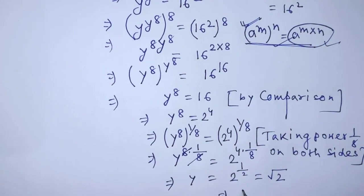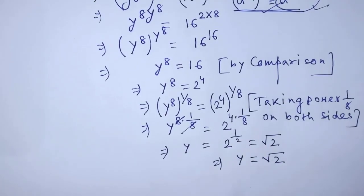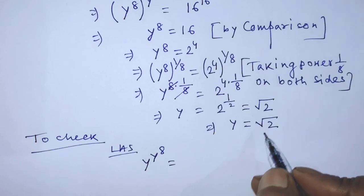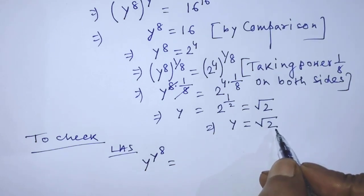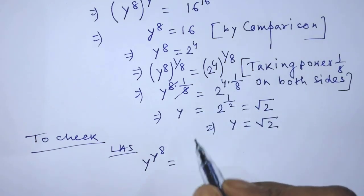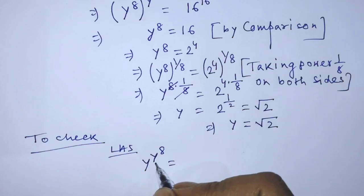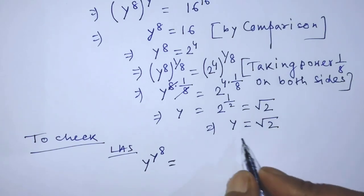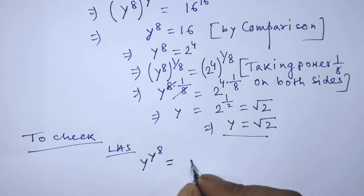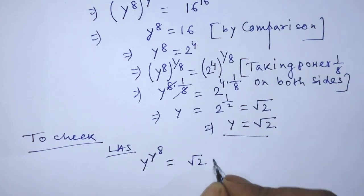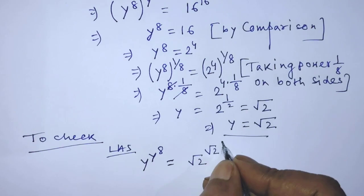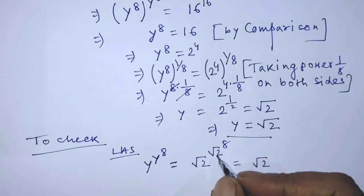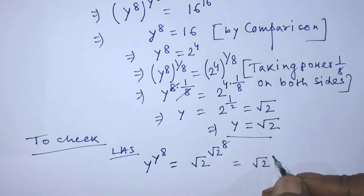To check this solution, we have to put the value y equals square root of 2 on the left hand side of the given equation. The left hand side is y raised to the power y to the power 8. Substituting, we get square root of 2 raised to the power square root of 2 to the power 8. In place of square root of 2 whole to the power 8, we get 16.